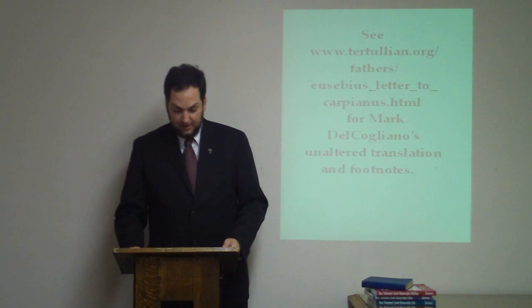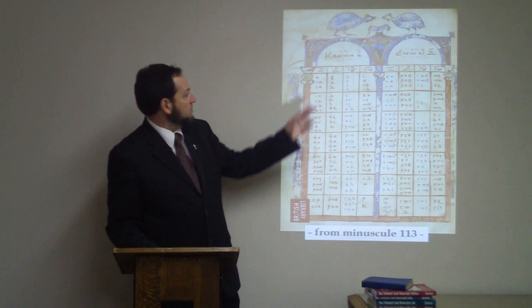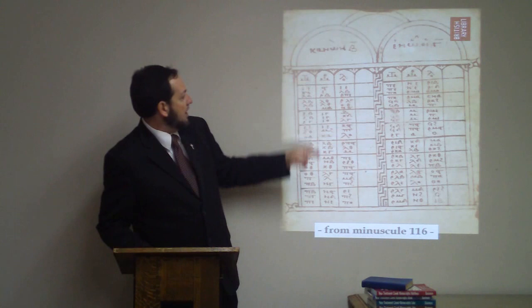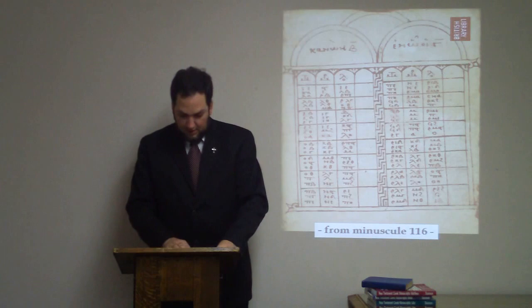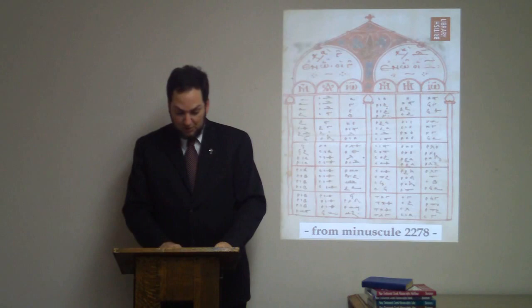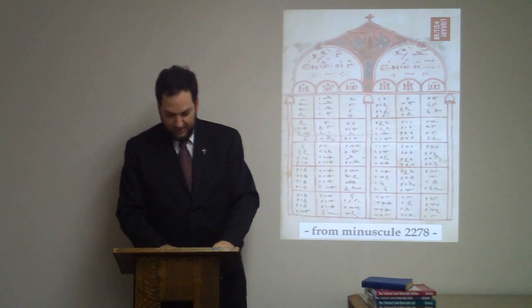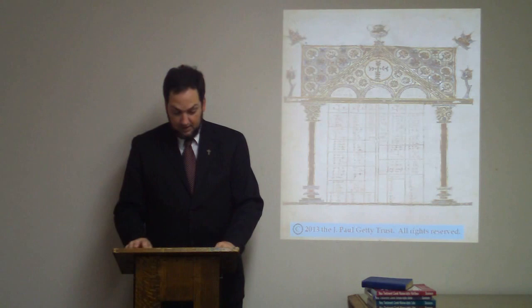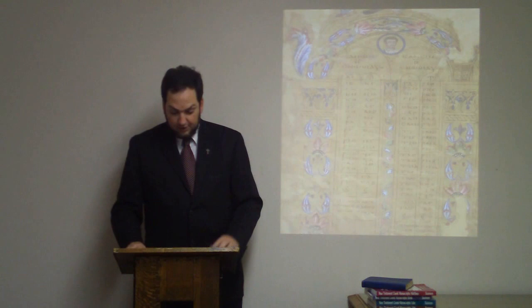These tables are set up for you below. The first of them lists the section numbers in which similar things are reported in the four Gospels: Matthew, Mark, Luke, and John. The second table lists the section numbers in which similar things are reported in the three Gospels: Matthew, Mark, and Luke. The third table lists the section numbers in which similar things are reported by Matthew, Mark, and John. The fifth table lists the section numbers in which similar things are reported in the two Gospels, Matthew and Luke. The sixth likewise by Matthew and Mark. The seventh likewise by Matthew and John. The eighth likewise by Mark and Luke. The ninth likewise by Luke and John. And the tenth is for unique things reported in each Gospel.